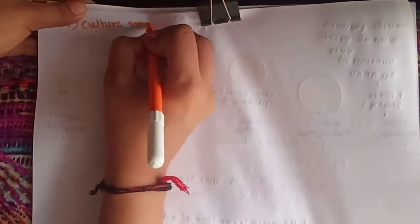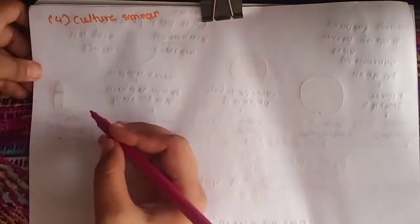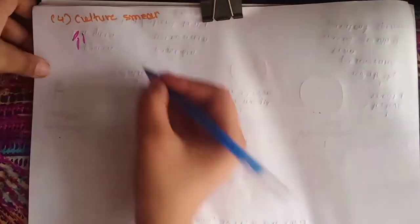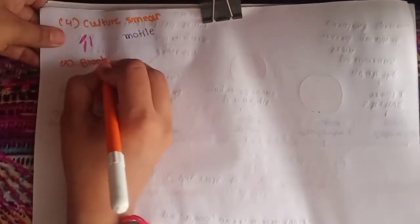The fourth method is culture smear microscopy. In culture smear microscopy, we will see gram-negative pink colored bacilli and actively motile bacilli.